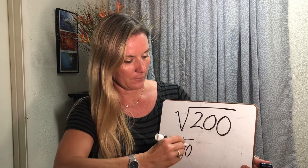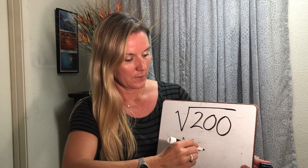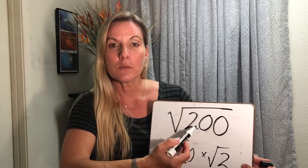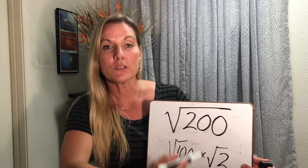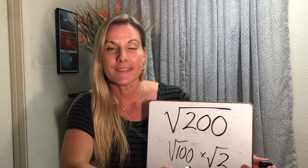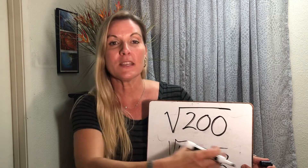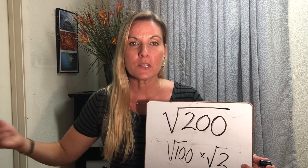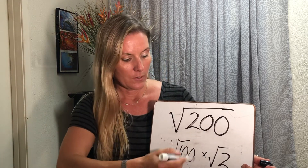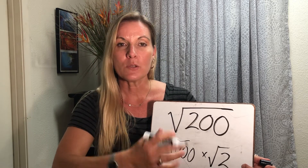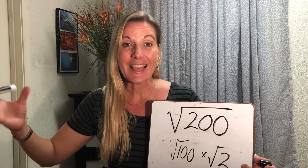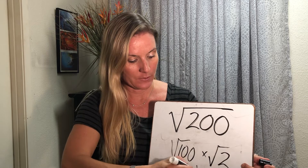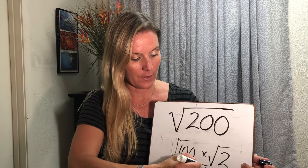So the square root of 100 times the square root of 2 equals the square root of 200. Then think about the perfect square and what you can pull out. The square root of 100, you can pull out a 10. So that turns into 10 times the square root of 2.